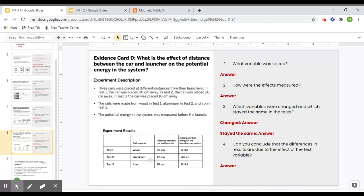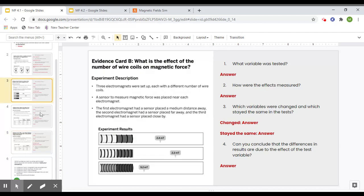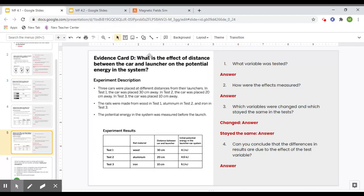But something that I'm controlling that I'm changing per test would be the rail material, and if we are just trying to see the effect of distance between the car and launcher, we would keep the rail material same in all three tests. So card B and card D, we would eliminate these evidence cards.